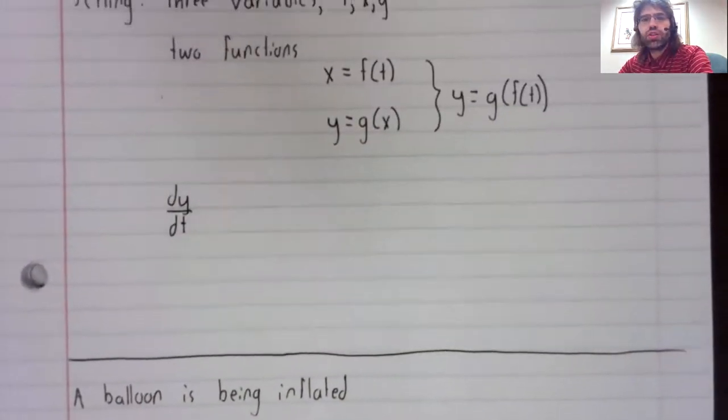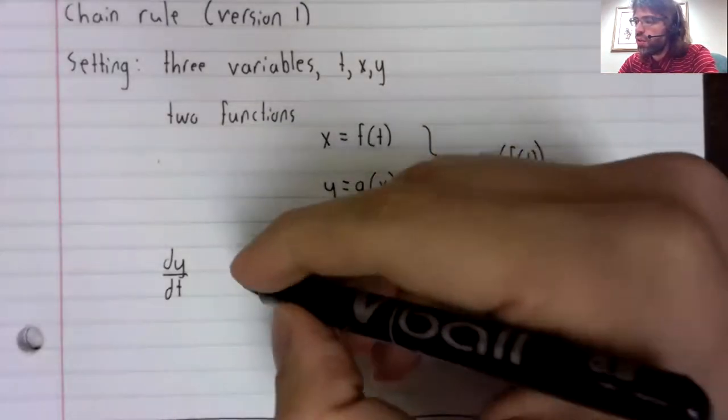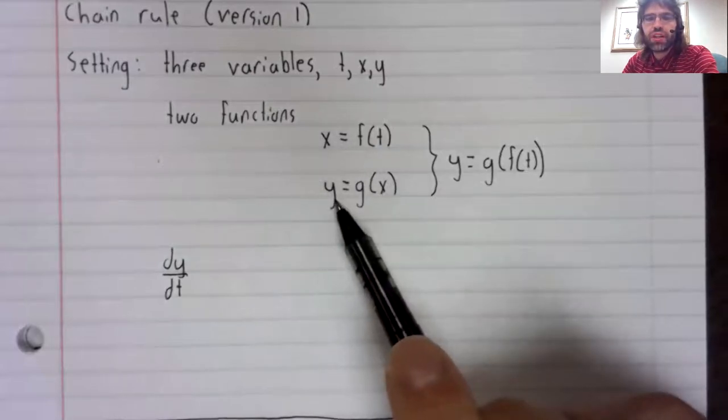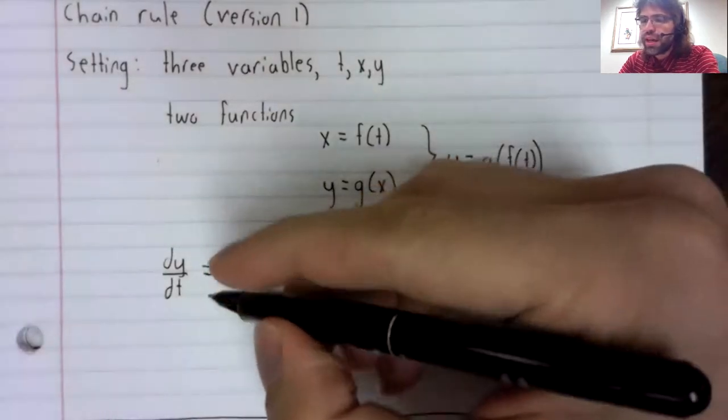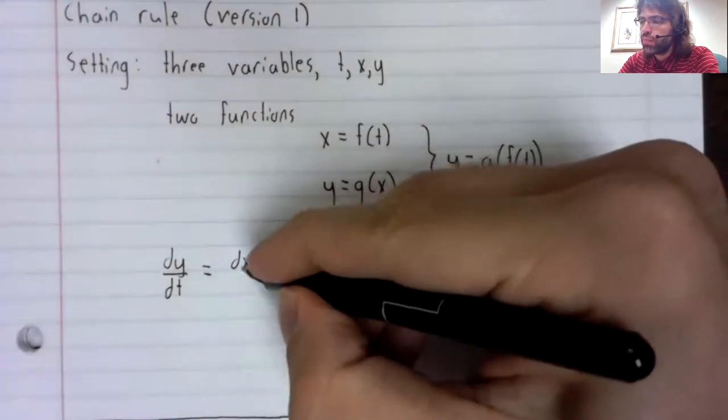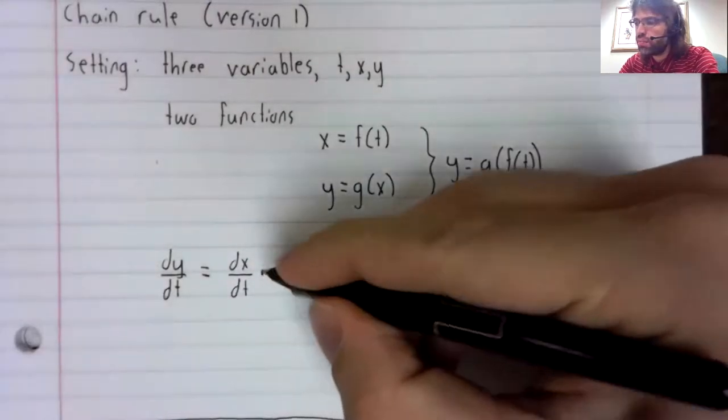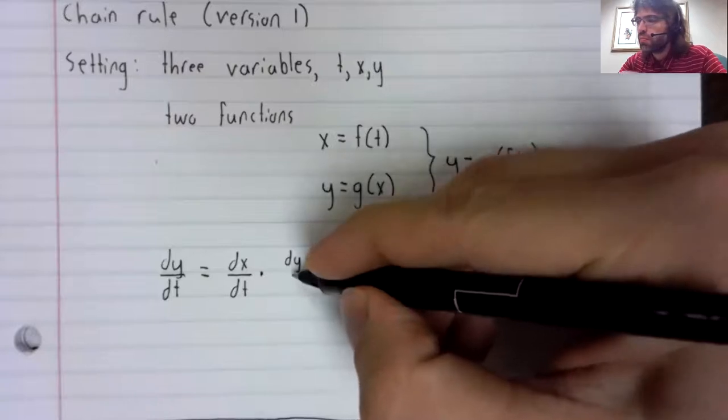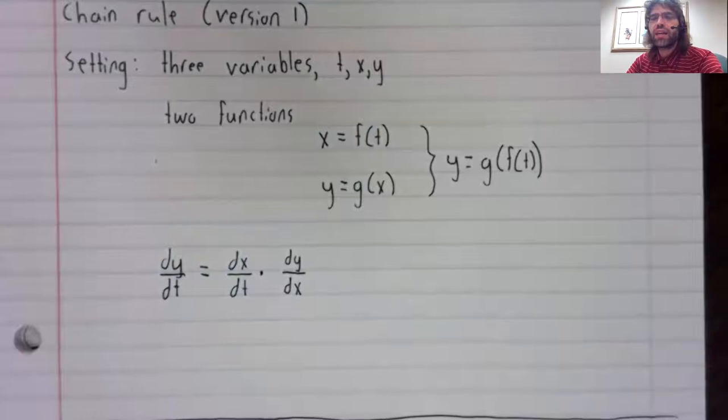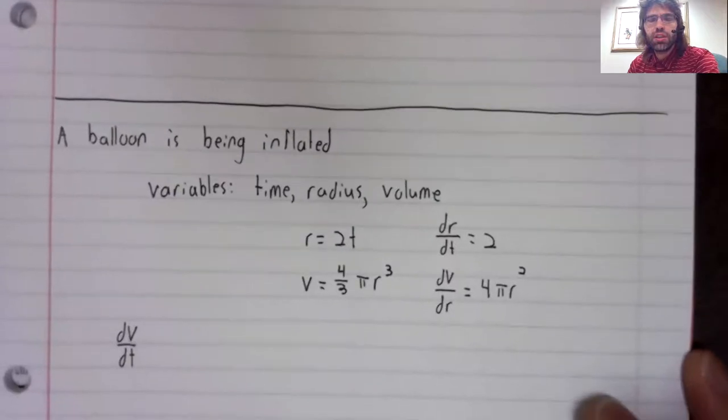What the chain rule says is that in this situation, you take the derivative of this function and you take the derivative of this function, and you multiply those together. The derivative of the first function times the derivative of the second function.